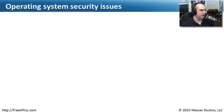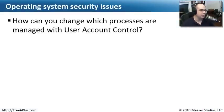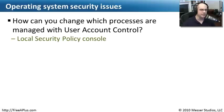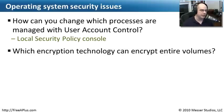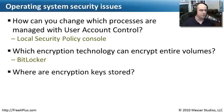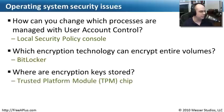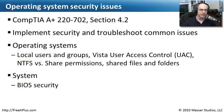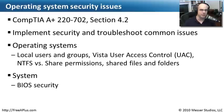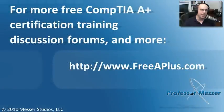Let's review some of these topics. How can you change which processes are managed with User Account Control? We can decide exactly what things to ask about via UAC in the local security policy console. Which encryption technology can encrypt entire volumes? That would be BitLocker. And where are the encryption keys stored for BitLocker? On most machines that support this, they are stored in the Trusted Platform Module chip — the TPM chip. That covers our requirements from the 220-702 Section 4.2 on operating system security and BIOS security. You can visit our website for absolutely free videos, message boards, and more.